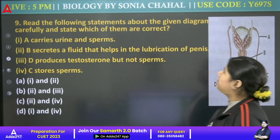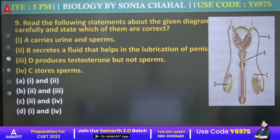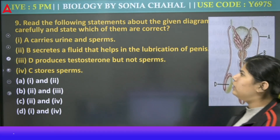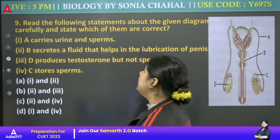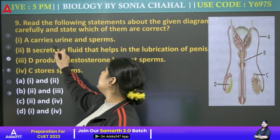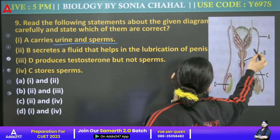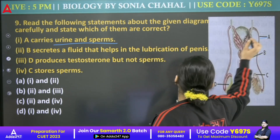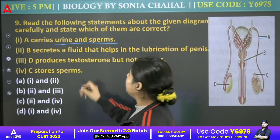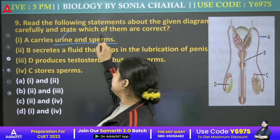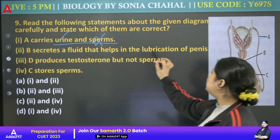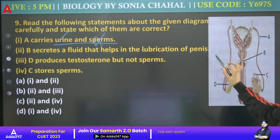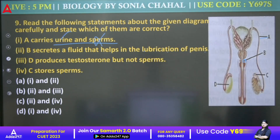Next: Read the following statements about the given diagram and tell which is correct. A — carries urine and sperm. In the ureter you have urine; sperm is not present. B — secretes fluid that helps in lubrication of the penis, yes, that is about the bulbourethral gland — that is the correct statement.